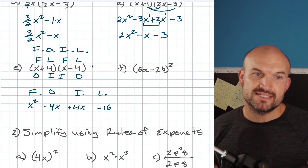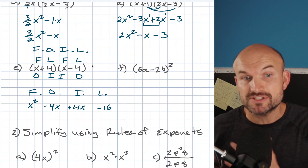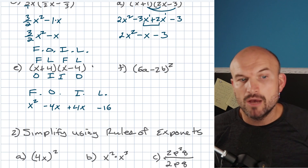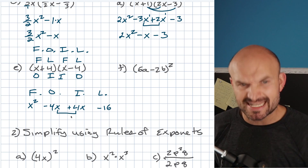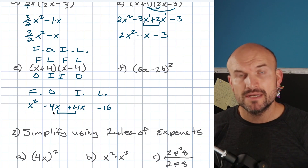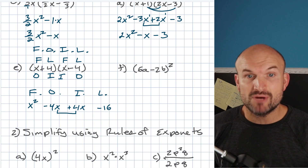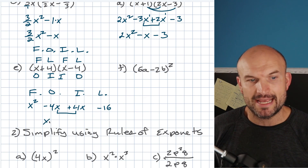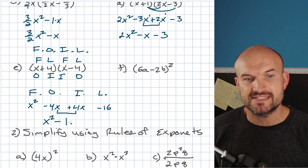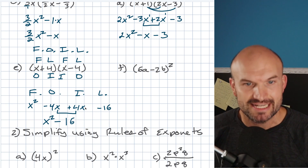This example is what we call the difference of two squares. When we multiply it out, our middle term goes to zero — we have a zero X, which is just zero. So we don't get a trinomial; we actually get a binomial. This simplifies down to X squared minus 16.